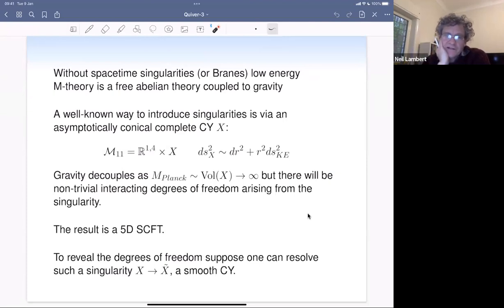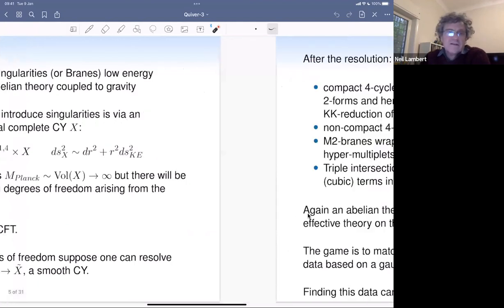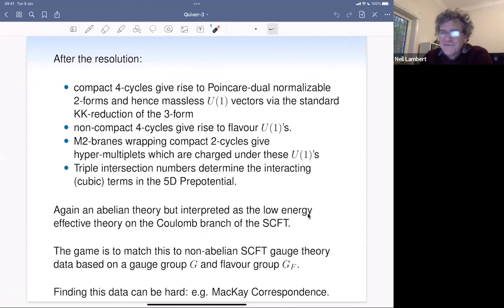However, a well-known way to introduce singularities is via an asymptotically conical complete Calabi-Yau X. So you split the 11-dimensional space-time into a five-dimensional Lorentzian bit and then the seven-dimensional bit, but it's not compact. And so one takes it to have this asymptotically conical form, or in fact, we'll take it to be completely conical. So gravity decouples because you send the volume to infinity. But the idea is that there's these little things that are stuck at the singularity, and those are interacting degrees of freedom that are arising from various states that might be localized to that singularity.